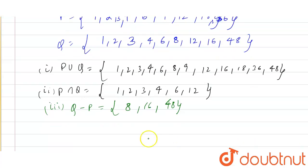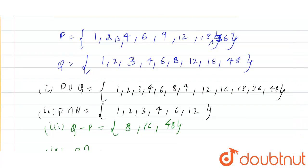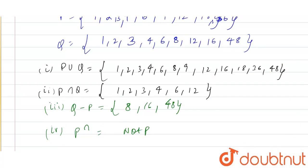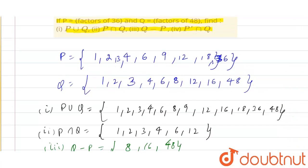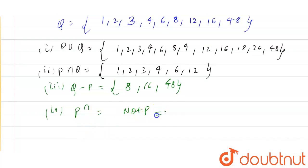Last is P complement intersection Q. So the fourth part is P complement. P complement is the universal set minus P, and we have to find P complement intersection Q. P complement intersection Q equals Q intersection Q, which equals Q itself, which is 1, 2, 3, 4, 6, 8, 12, 16, and 48. Thank you, this is the final answer.